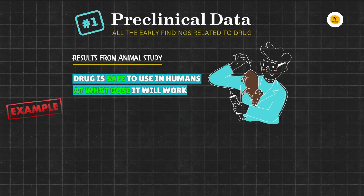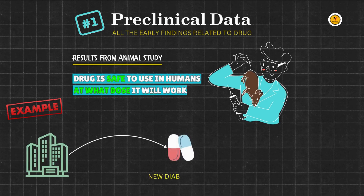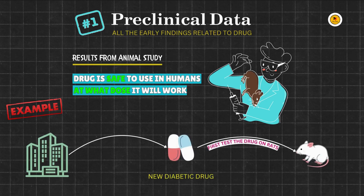For example, if a company develops a new diabetes drug, they first test that drug on rats to see if it lowers blood sugar without causing harm.